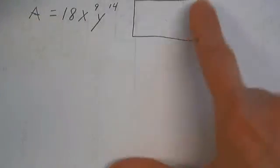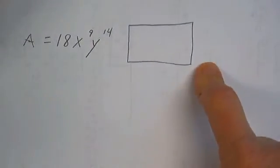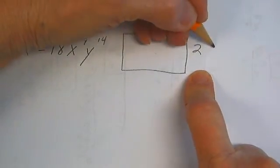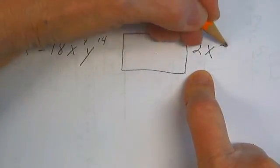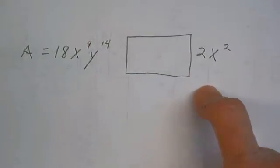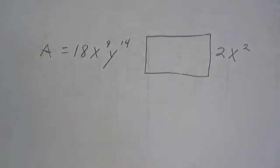The width of the rectangle is 2x squared. Find the length. Don't panic. This is easy.